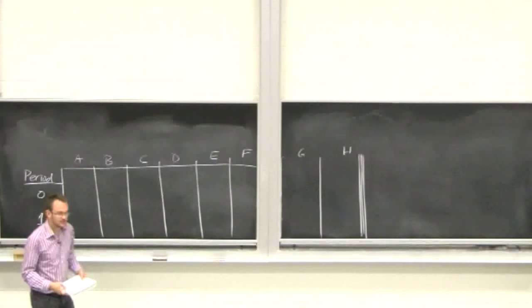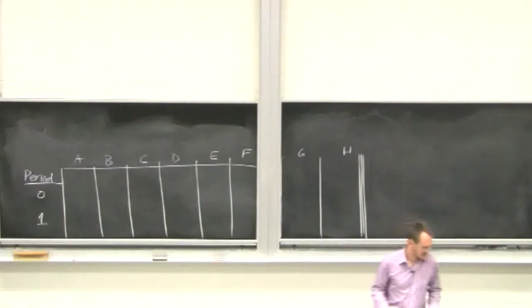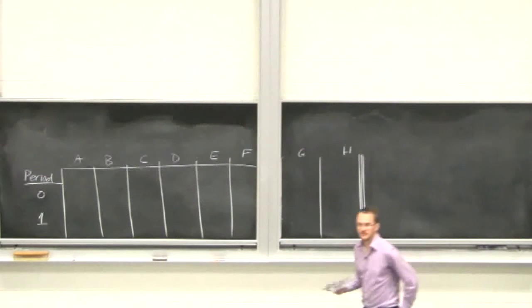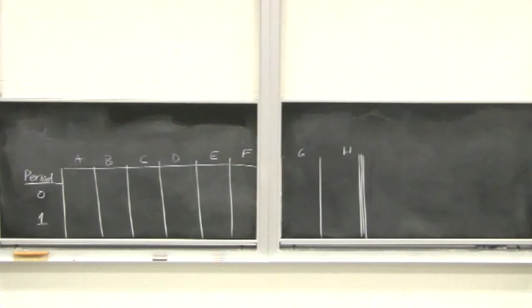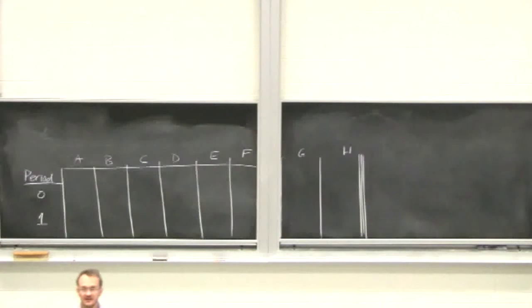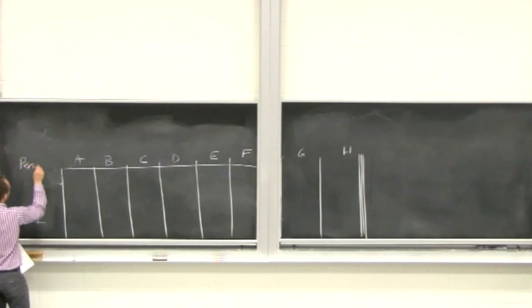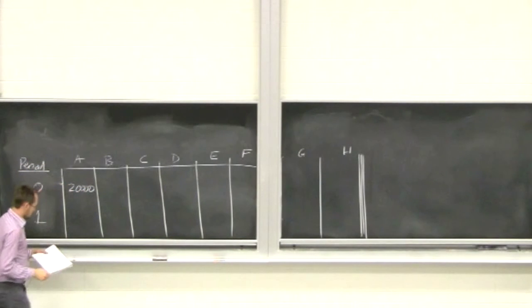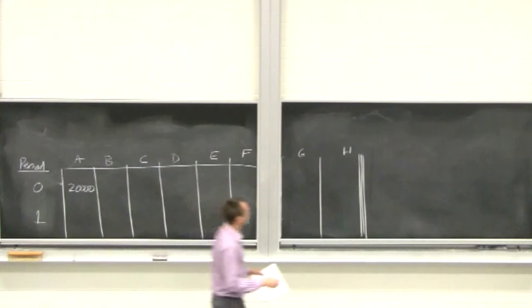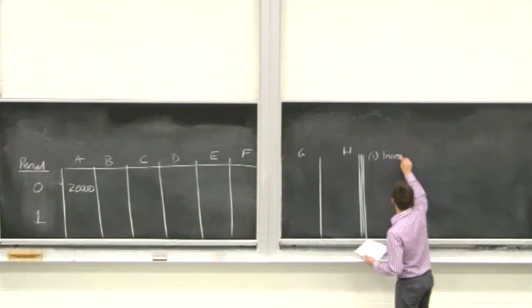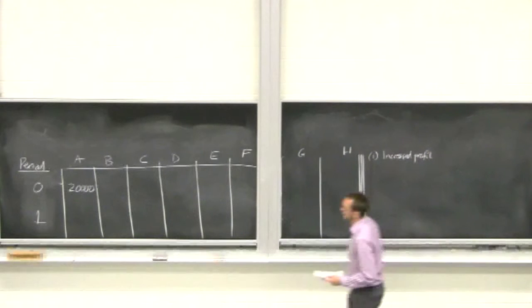Column A is income. What is the income in period zero? Everyone agrees: $20,000. This equipment is plug-and-play — you buy it off the shelf, install it, run it, and you start making those savings right away. Some questions may say it takes a year before it's up and running, but with this equipment it's off the shelf, so we earn that income right away in period zero.